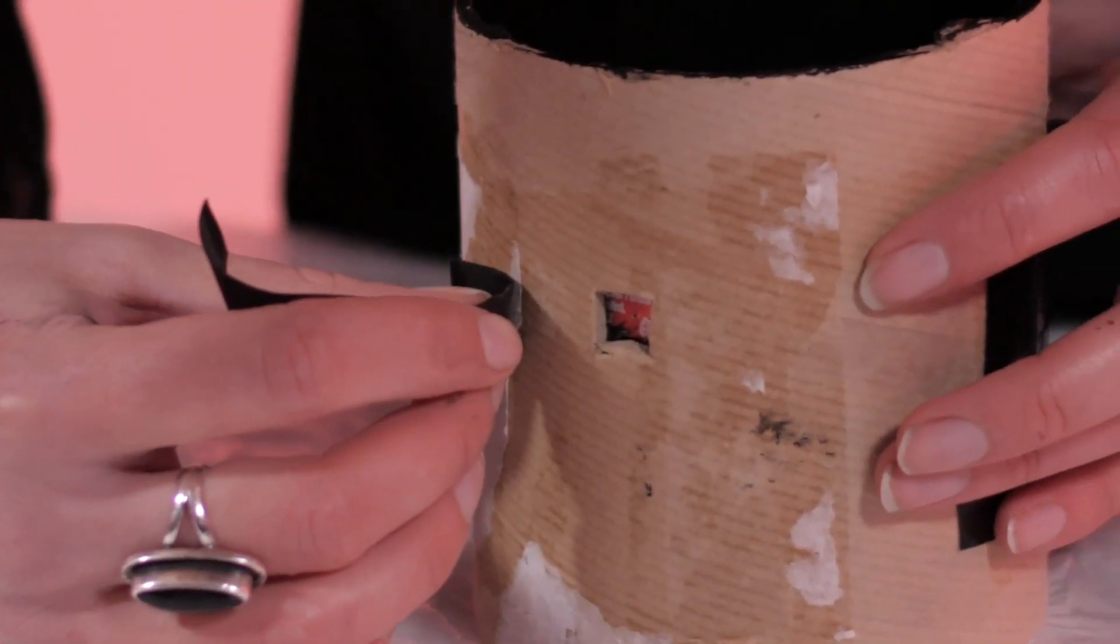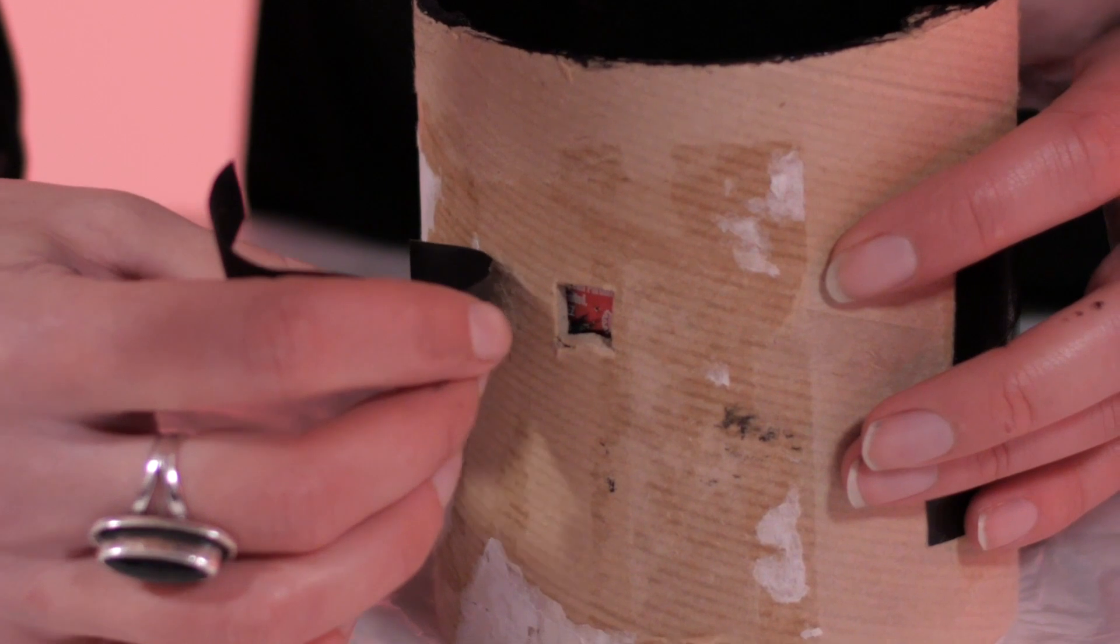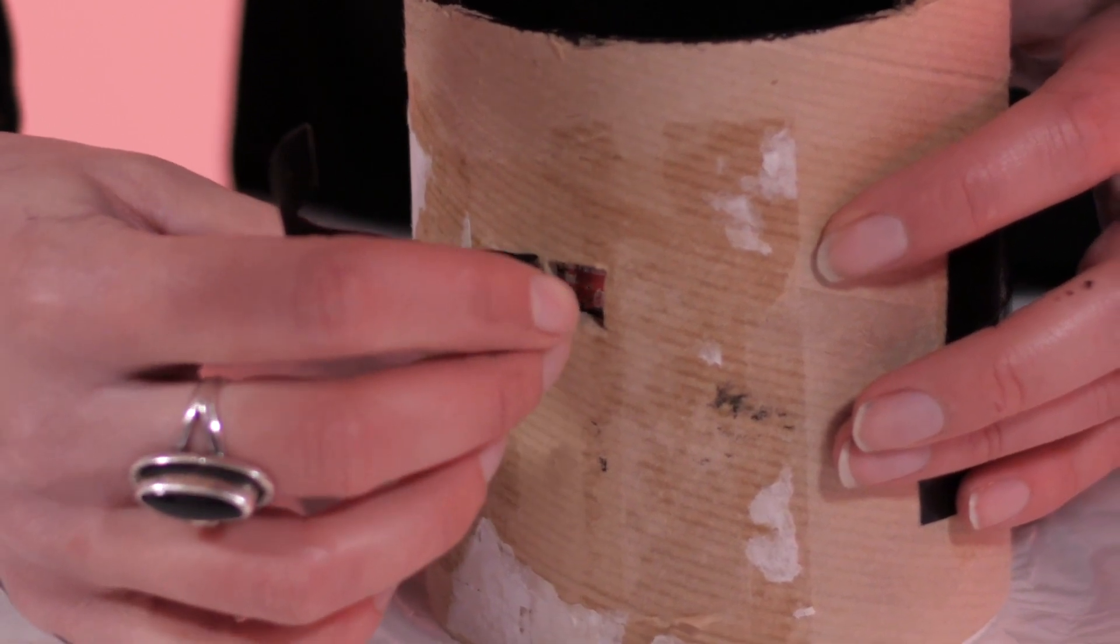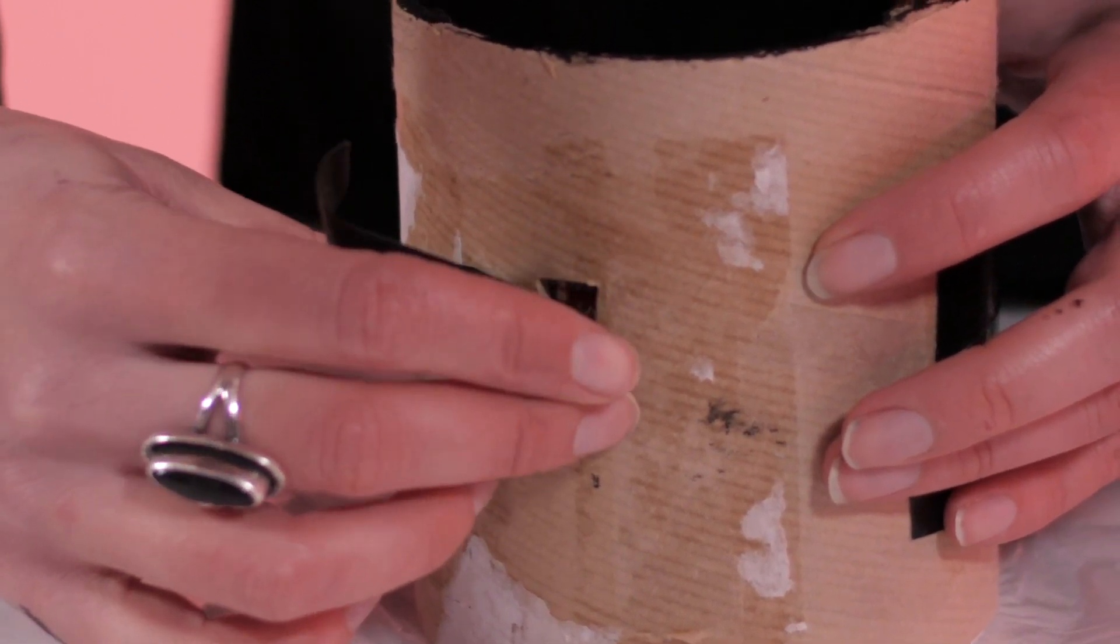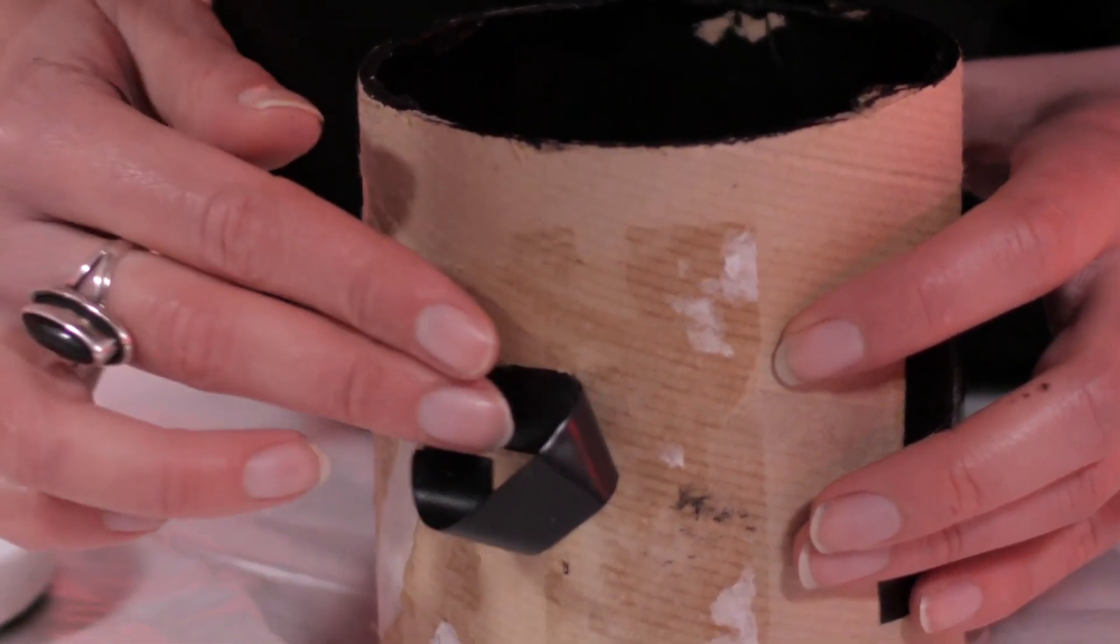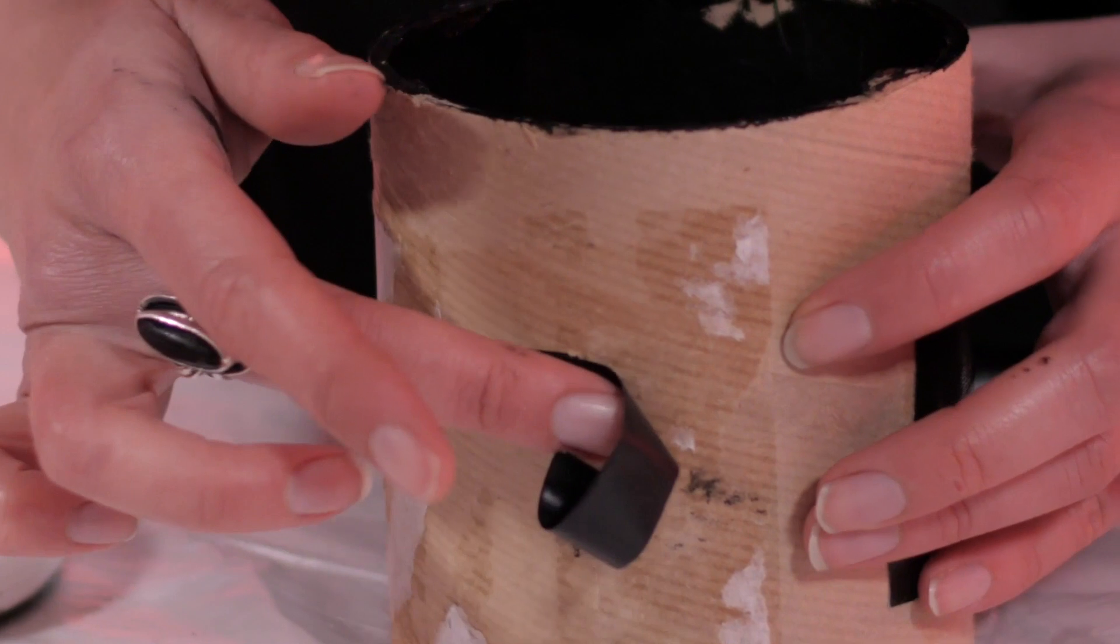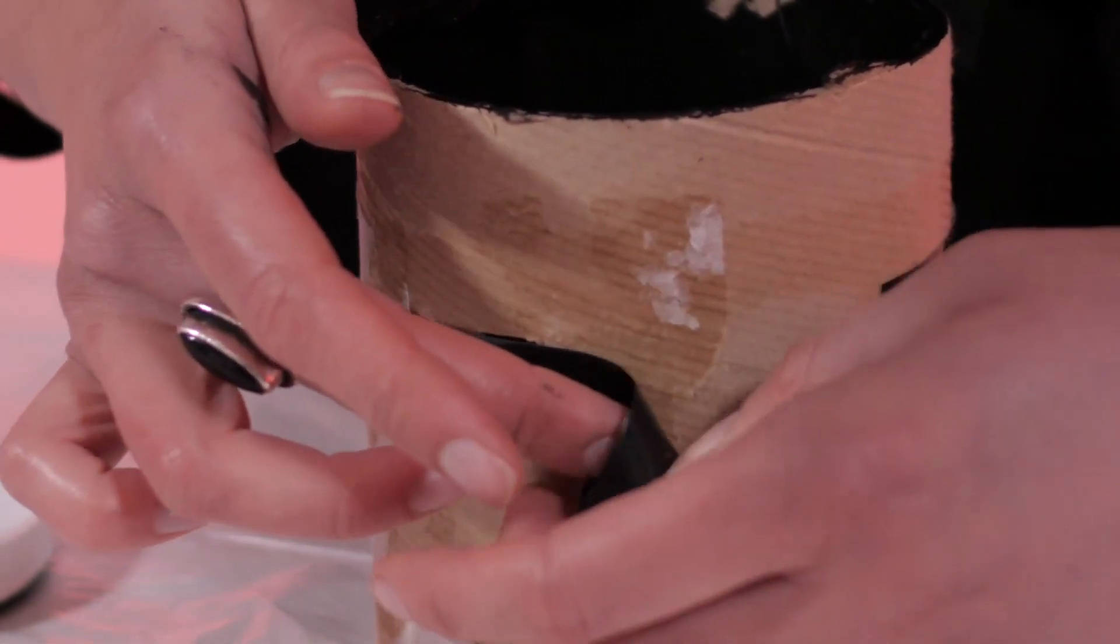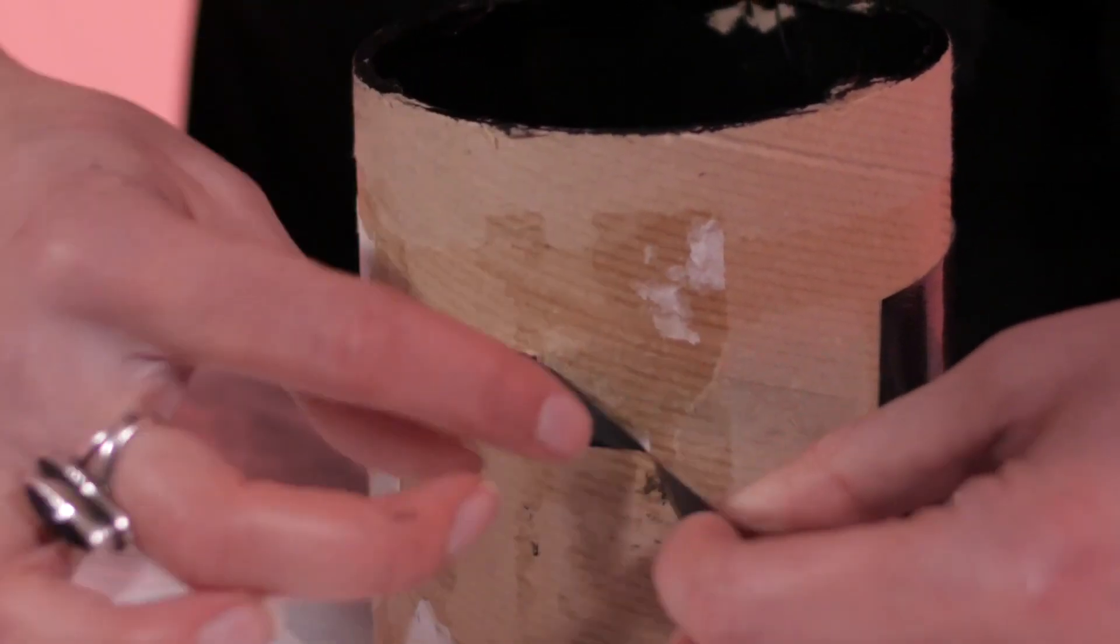Now make a shutter using another piece of electrical tape. This is so that you control when light gets into the camera. So what I do is I cut out a piece of tape and then I make a tab on one of the ends so that I can easily open and shut the shutter.